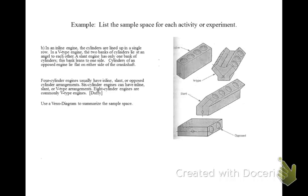In an inline engine, the cylinders are lined up in a single row. In a V-type engine, the two banks of cylinders lie at an angle to each other. A slant engine has only one bank of cylinders — this bank leans to one side. Cylinders of an opposed engine lie flat on either side of the crankshaft. 4-cylinder engines usually have inline, slant, or opposed cylinder arrangements.